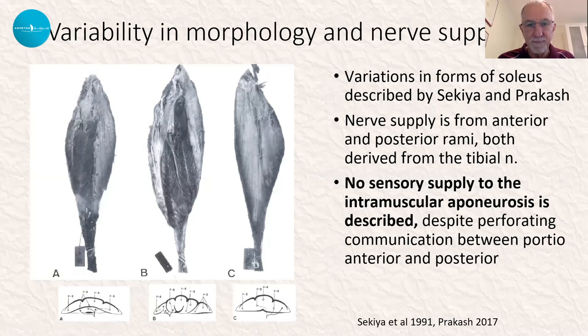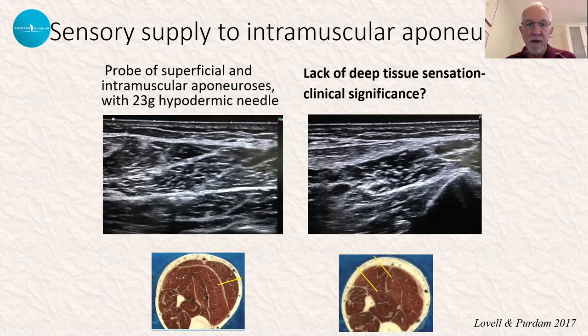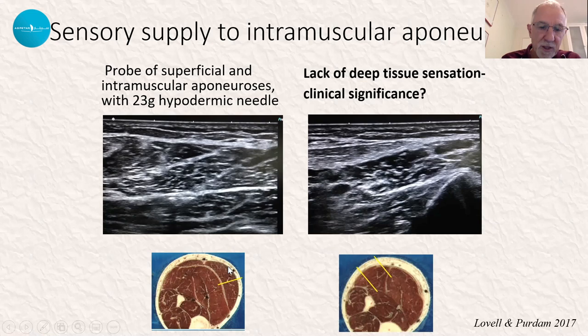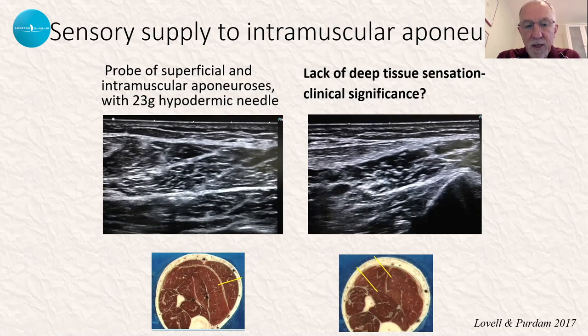Exploring this further, Greg Lovell, a doctor I worked with, and I decided to explore this with a 23-gauge hypodermic needle and a willing participant. Passing the needle through the superficial fascia produced some sensation — let's call it three or four out of ten in terms of discomfort. But then passing it through the soleus aponeurosis, there was in fact no sensory awareness of that structure as the needle passed through. Similarly, we explored the anterior aponeurosis of soleus and the central tendon, and again there was no real sensation.